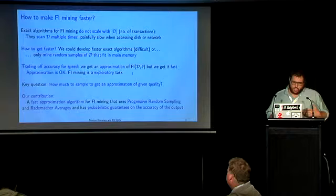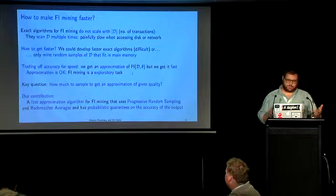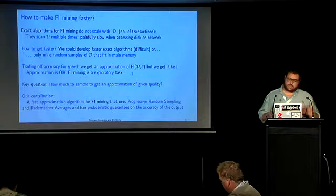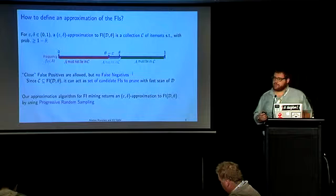The key question is: how do we study the trade-off between accuracy and speed? How much do we need to sample to obtain an approximation of some given quality? What we present is a fast approximation algorithm for frequent itemset mining that uses progressive random sampling and Rademacher averages, which I'm going to describe in a second. The algorithm has probabilistic guarantees on the accuracy of the output.